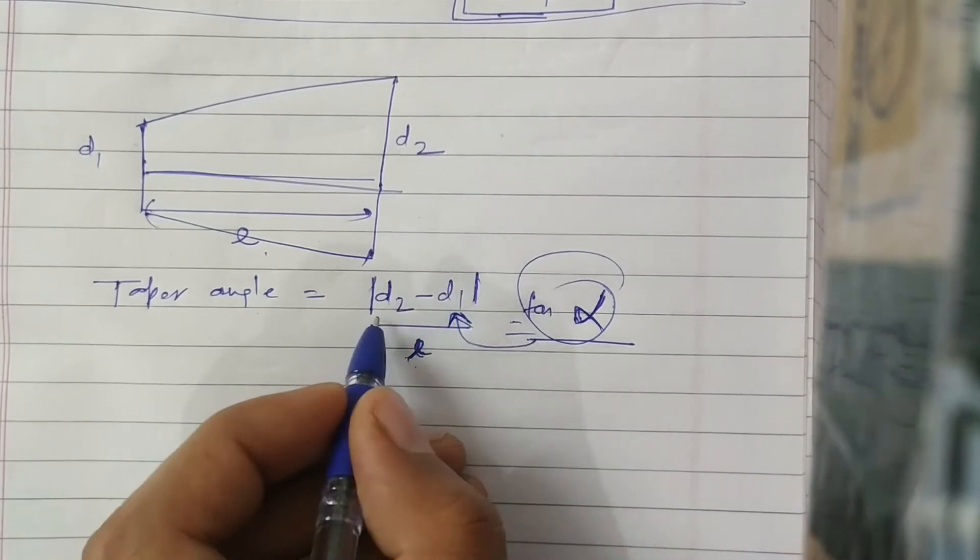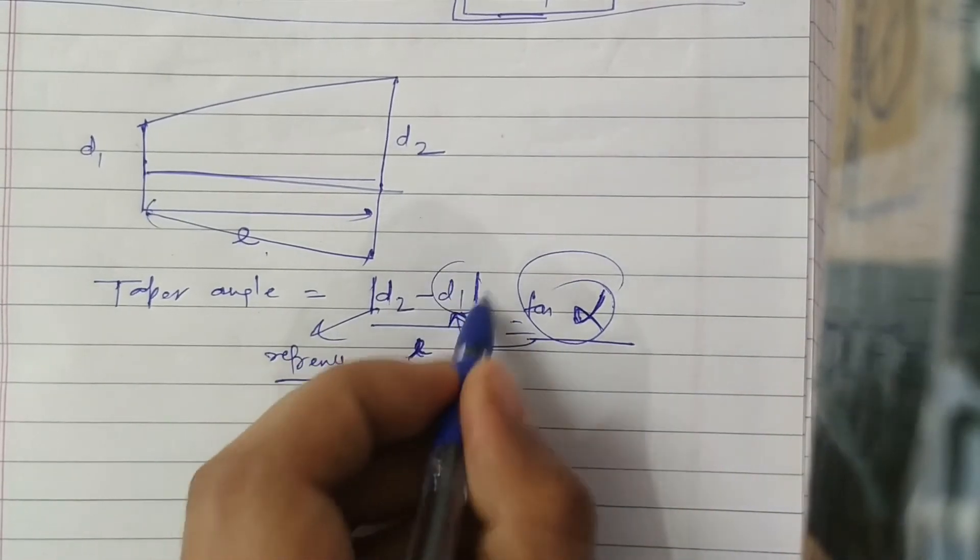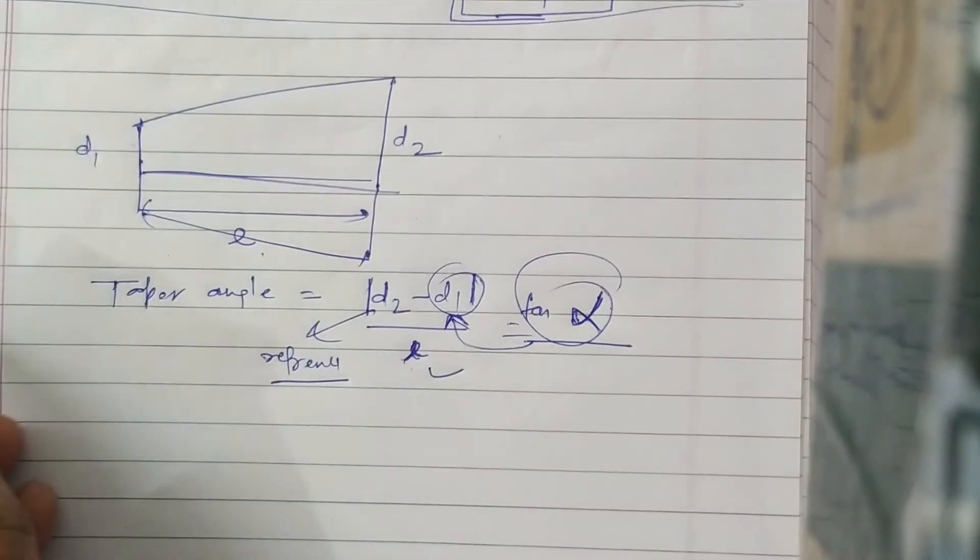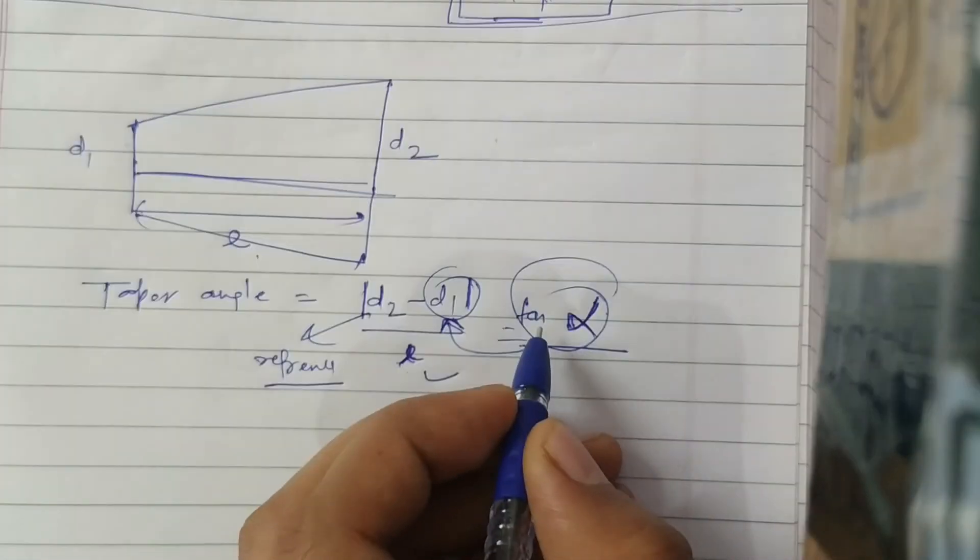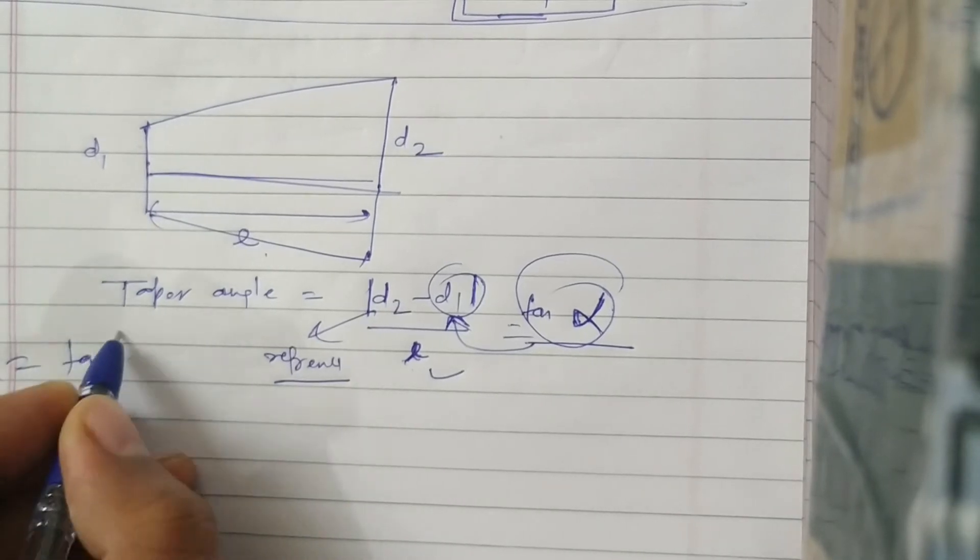They will give d1 as a reference diameter, they will give length, and you have to calculate this dimension. Then you will be able to design in your CAD software. So alpha equals tan inverse of this quantity, so you will be able to calculate anything.